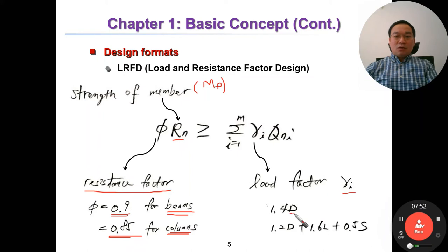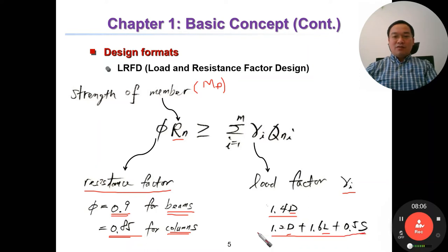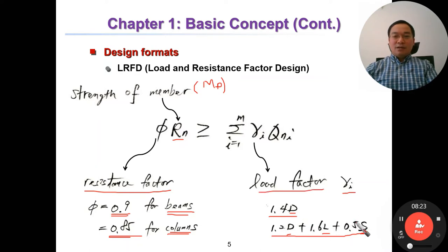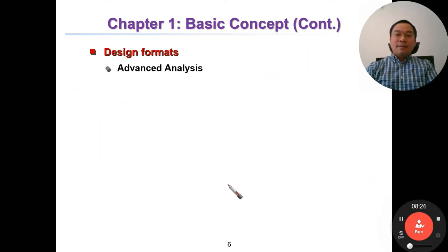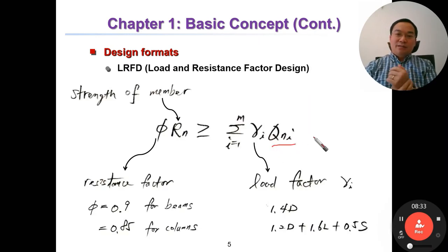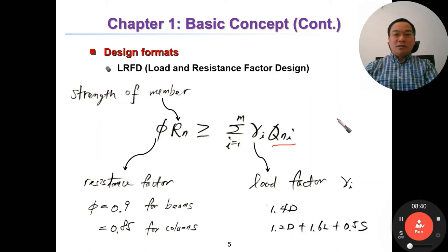Gamma_i is the load factor depending on the load and its combination. For dead load only, the load factor is 1.4. For a combination of dead load, live load, and snow, we have different load factors: 1.2 for dead load, 1.6 for live load, and 0.5 for snow. So gamma_i depends on the load and its combination, and Qni is the load effect like the moment of the section induced by the load, depending also on the boundary conditions.